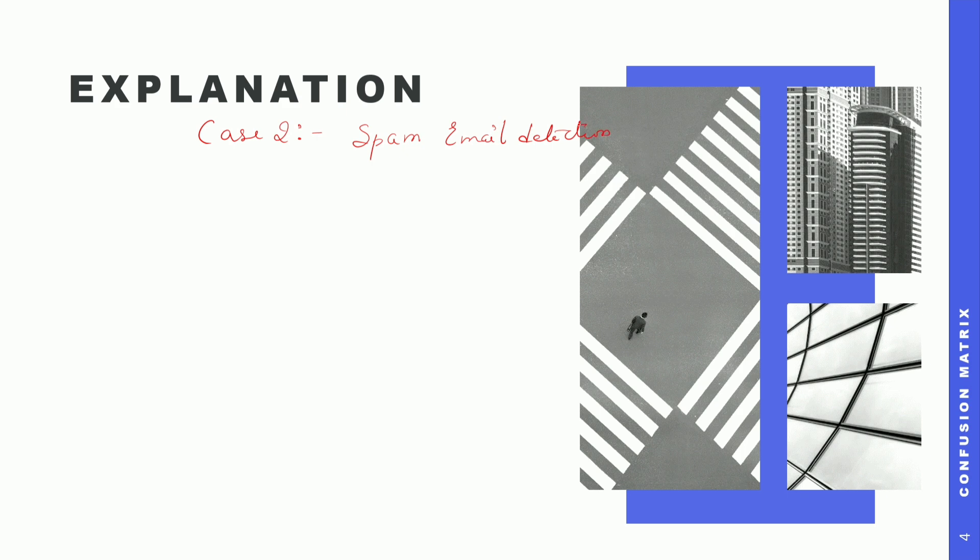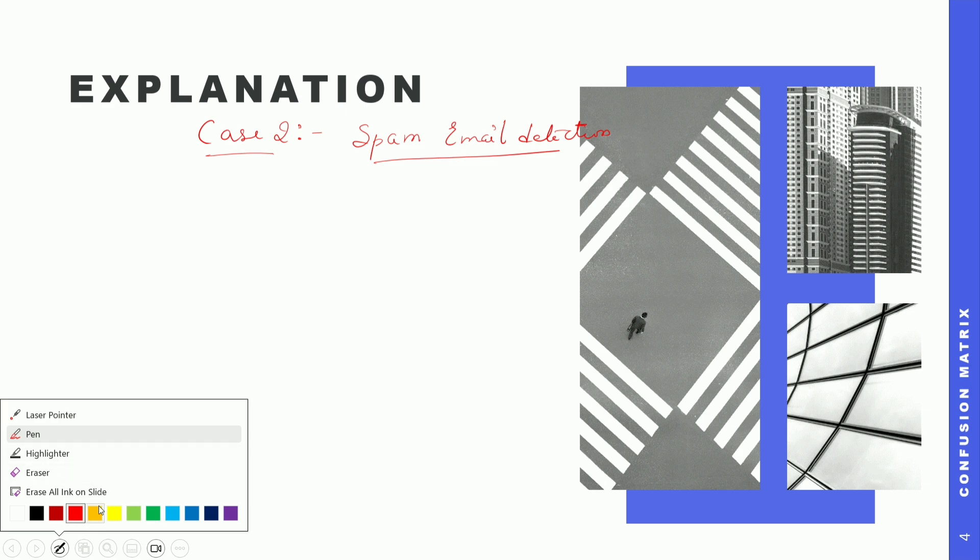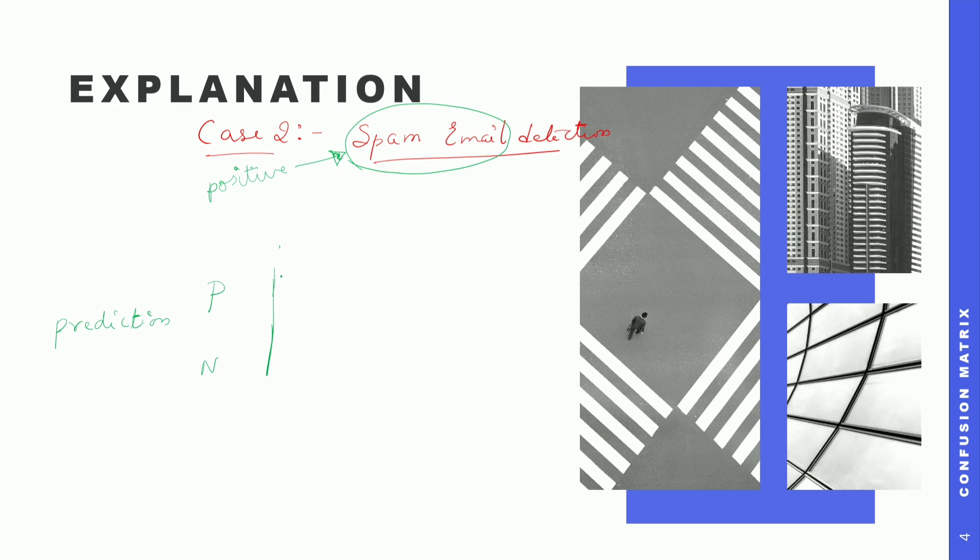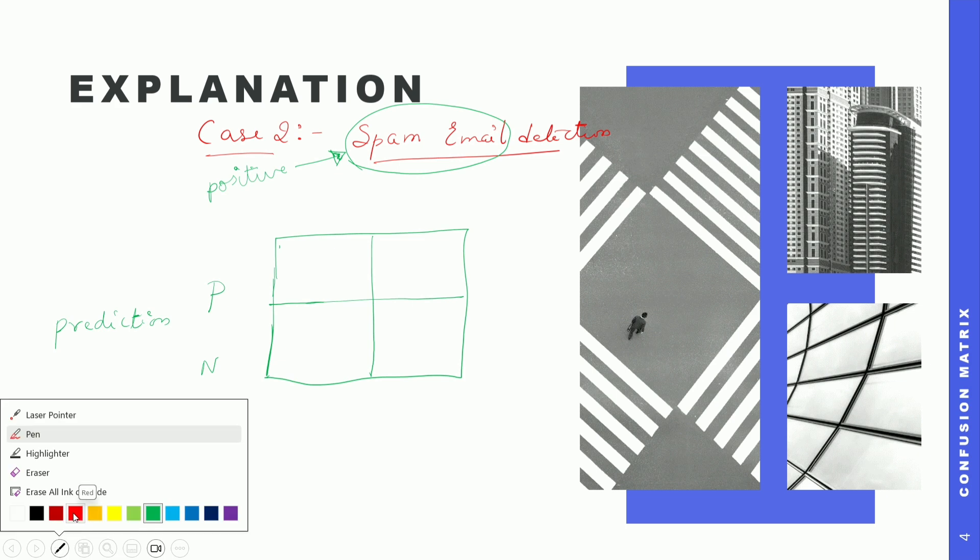What is a spam email? Detecting a spam email is what is positive for us. Detecting a spam email is positive for us. So this is what is the problem - we have to identify spam emails correctly. So that's positive for us. So we are predicting something. We are predicting positive, that is predicting as spam email. Draw the confusion matrix. This is actual - actually the mail was a spam or not.